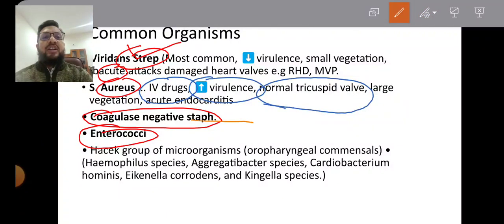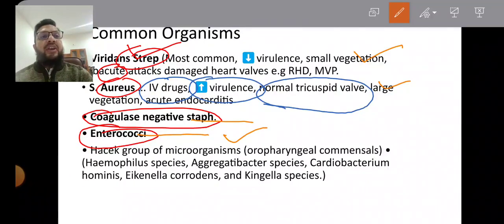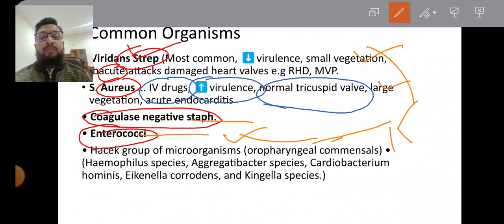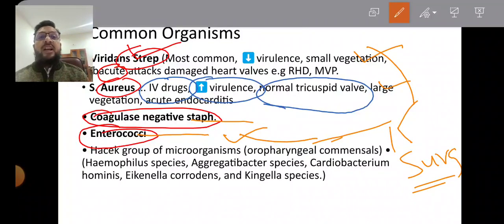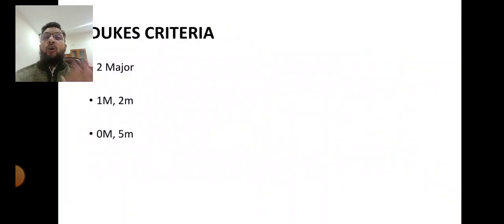Coagulase-negative Staphylococci are not as harmful to the heart. However, remember these three organisms: Staphylococcus viridans, Staphylococcus aureus, and Enterococci. If any of these three organisms are found in the blood culture of a patient with infective endocarditis, the patient is a candidate for surgery—either valve replacement or native valve surgery.